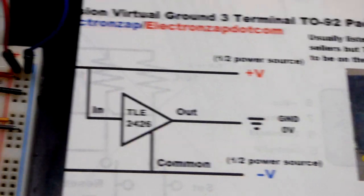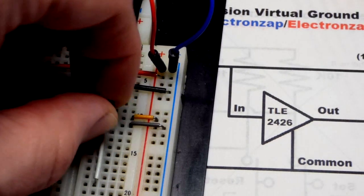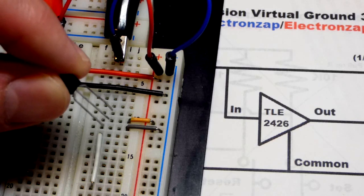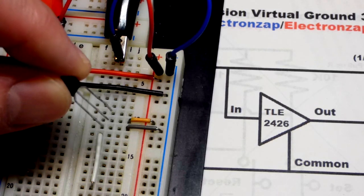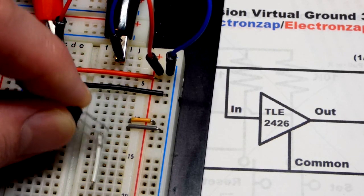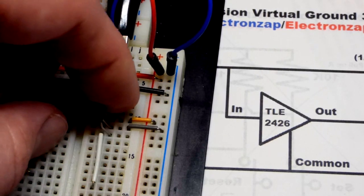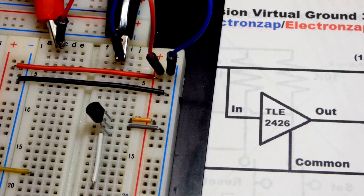I already have it in the board right here. Out at the bottom, Common in the middle, and In at the top. Out goes to this jumper, Common to that jumper goes to the negative rail, and In at the top pin goes to the positive rail.